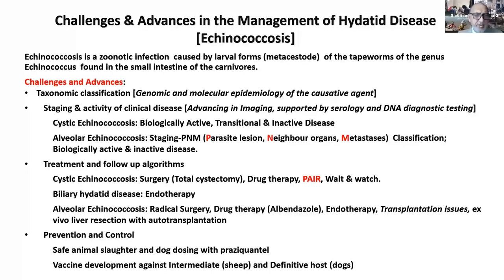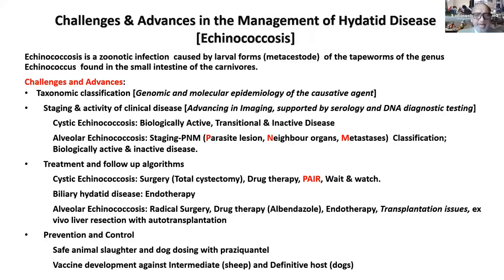Prevention and control include safe animal slaughter and dog dosing, particularly with praziquantel, which has been very useful in New Zealand, parts of Australia, and some regions of Europe where the disease has been controlled. There is news about vaccine development against intermediate hosts, particularly sheep, and new data suggest that even definitive hosts may also benefit from vaccines.